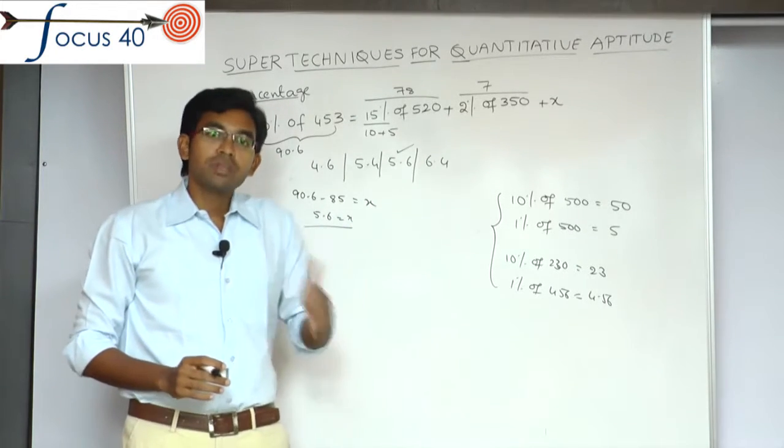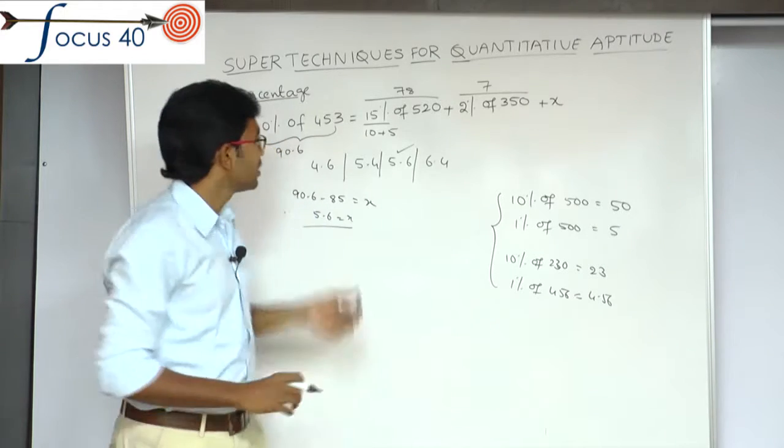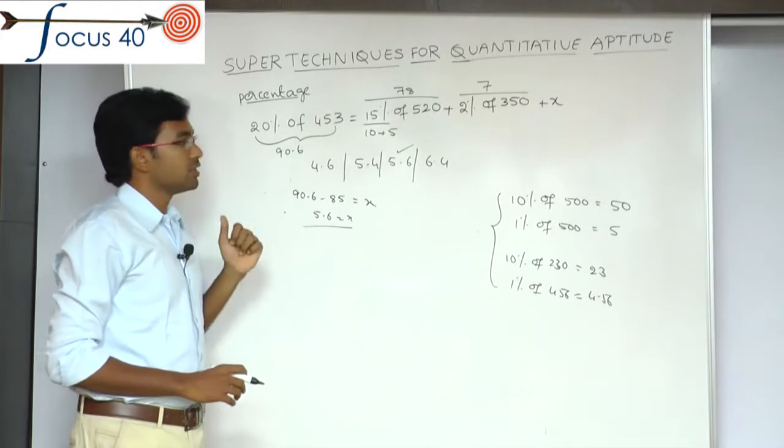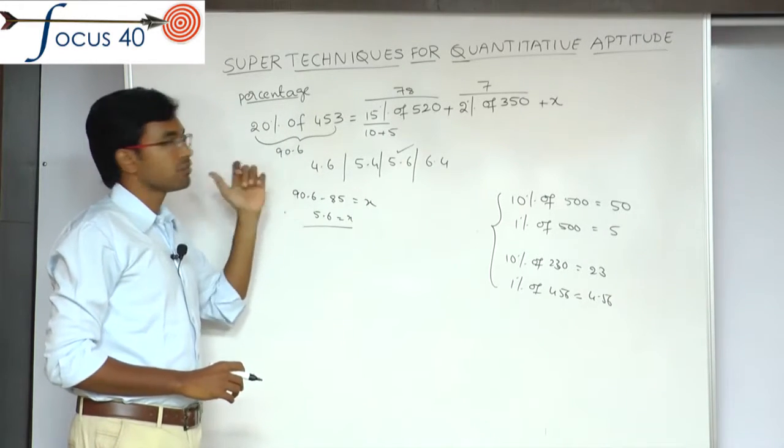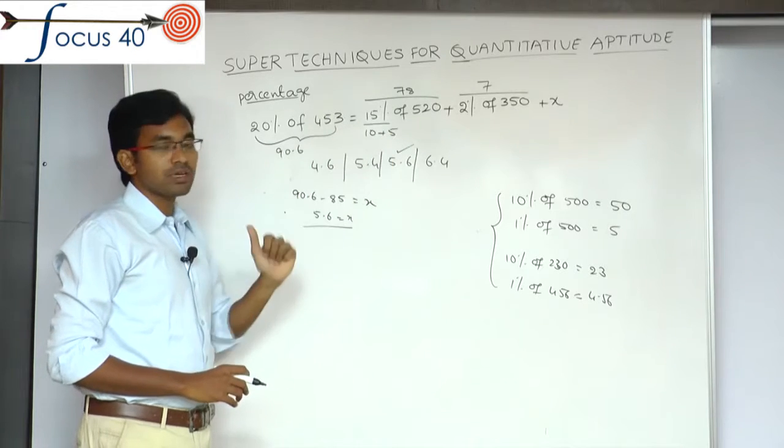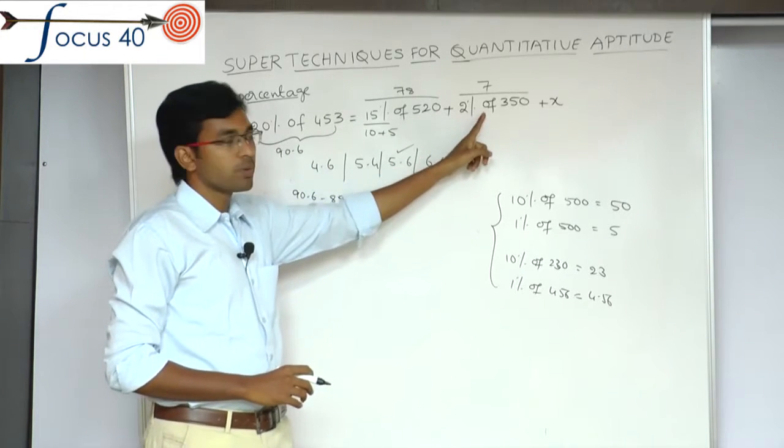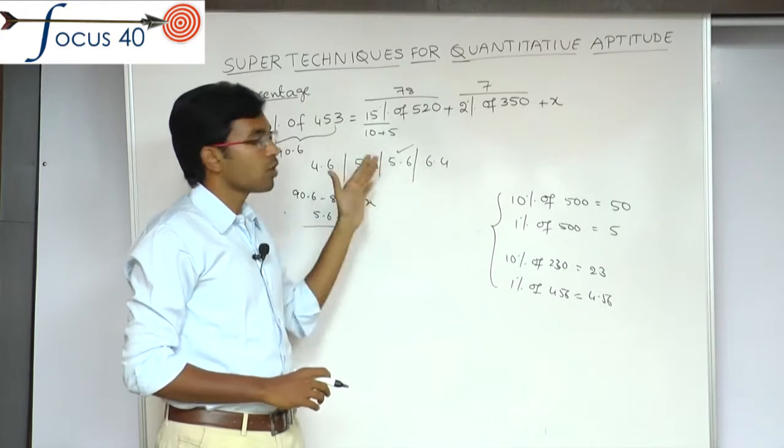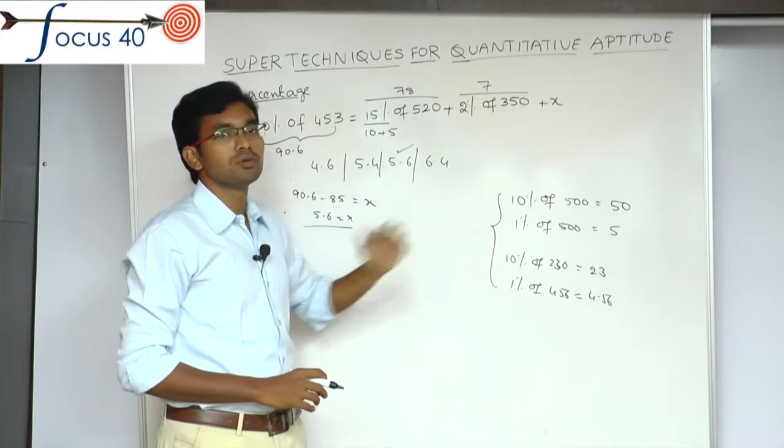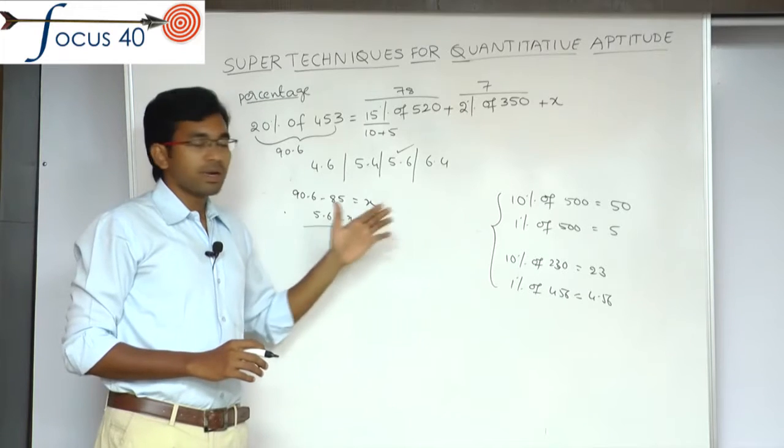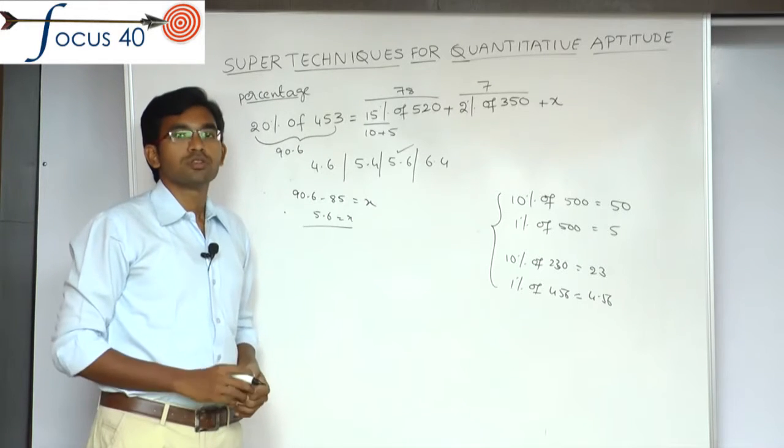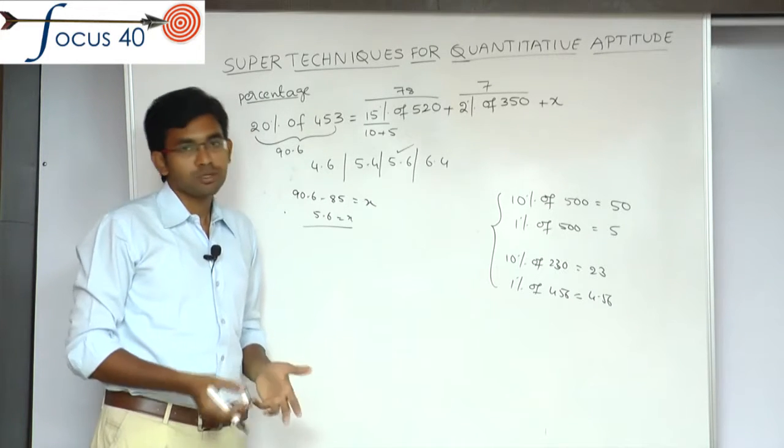With the traditional method, you need to solve 20 by 100 into 453, 15 by 100 into 520, and 2 by 100 into 350. You need to solve all these 3 fractions and simplify. That is the longer method. That is why the shortcut method saves time.